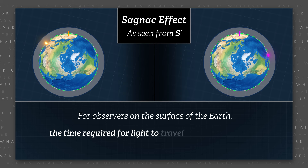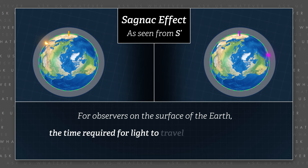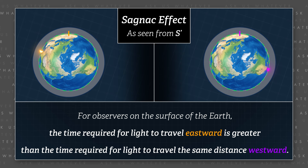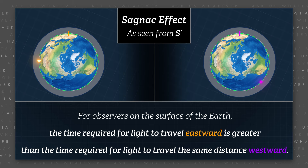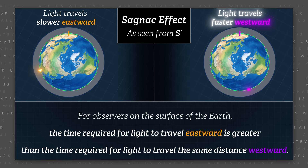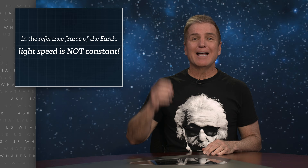So what does this all mean? Alright, now here's where I'm going to be guilty of physics blasphemy. For observers on the surface of the Earth, the time required for light to travel eastward is greater than the time required for light to travel the same distance westward. Therefore, Earth-bound observers using UTC or GPS synchronized clocks will find that light travels slower in the eastward direction and faster in the westward direction. In the reference frame of the Earth, light speed is not constant.